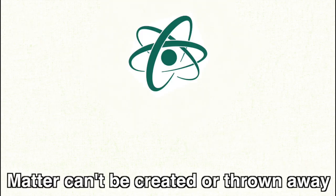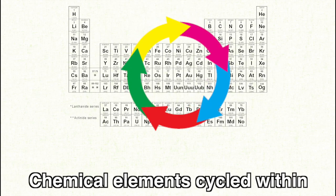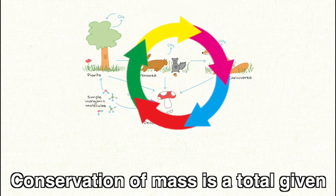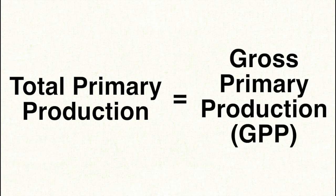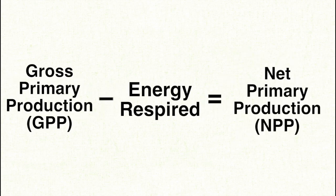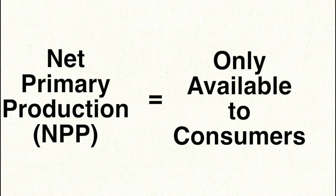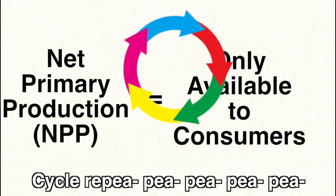By the way, gotta say: matter can't be created or thrown away — chemical elements cycle within. Gross primary production is known as GPP; minus energy used for respiration, it goes NPP. Net primary production is only available to consumers. It's like a repeat.